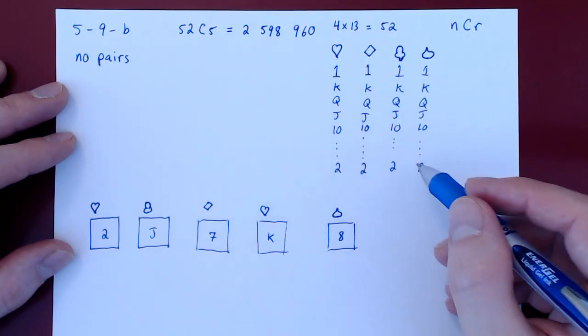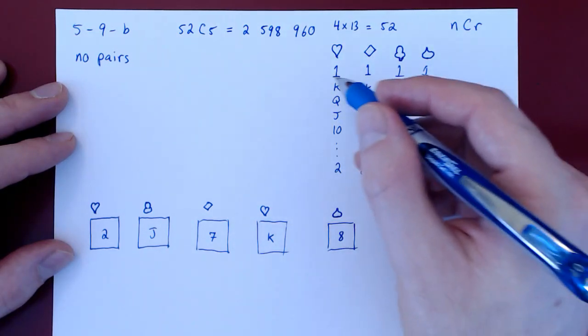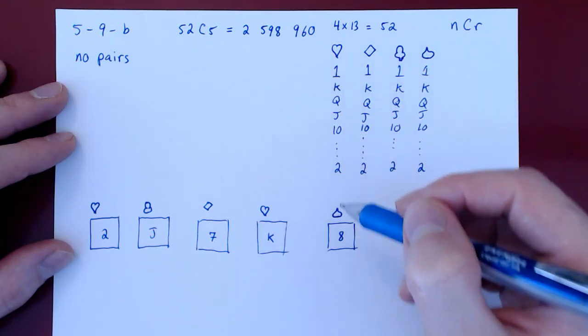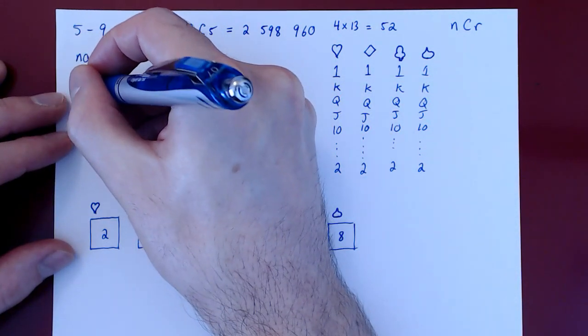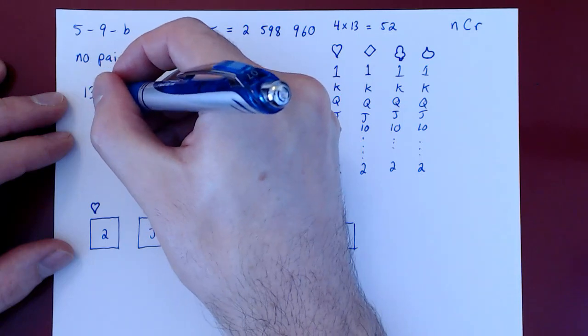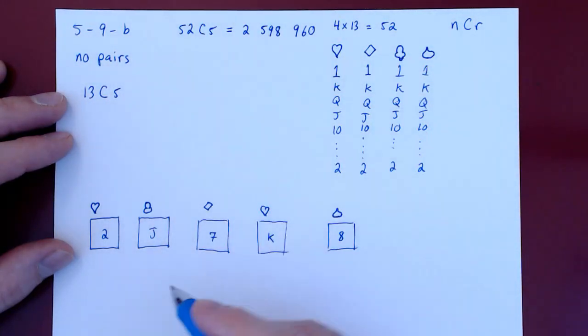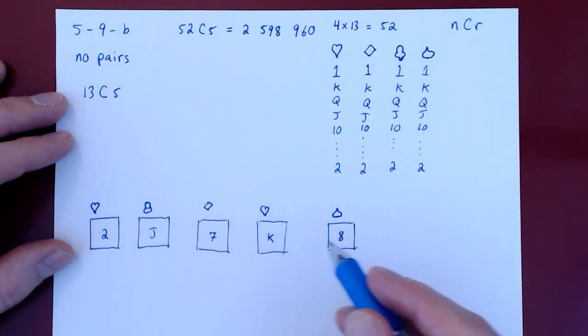So how many kinds are there? Twos, threes, fours, fives, up to aces. There are 13 different kinds. So out of 13 different kinds, we choose the five that we need: one, two, three, four, five.